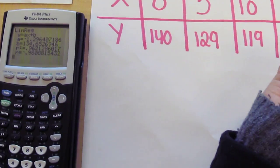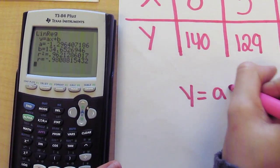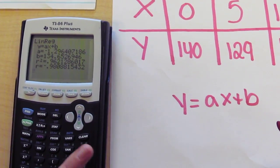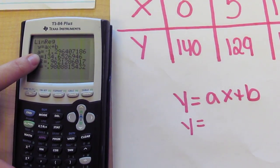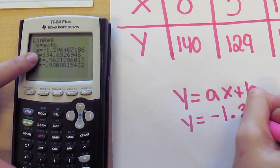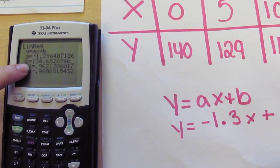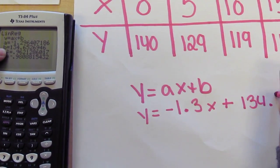And then the equation for that is Y equals AX plus B. The A would be negative 1.3X and the B would be 134.7.